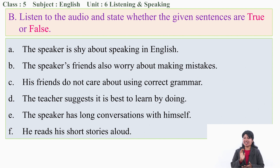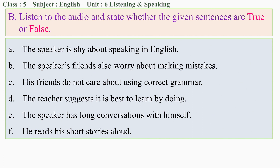I am a bit shy when I have to speak in English. I am a little worried about making mistakes. Many of my friends don't worry about mistakes - they just talk and talk. They always get their message across, even if their grammar is wrong. I think this is the best thing to do. My teacher always says it's best to learn by doing. If I don't try to speak English, I'll never be able to use it when I need it. One thing I started doing recently was talking to myself. I have short conversations with myself. I think it works. I also make short stories about people and say them aloud. I do this in my room, of course. People would think I'm crazy if I did it in class or on the train.